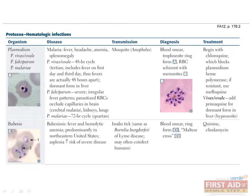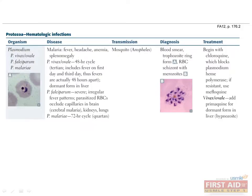The two protozoa causing hematologic infections are Plasmodium and Babesia. Members of the Plasmodium genus — P. vivax, P. ovale, P. falciparum, and P. malariae — are the causes of malaria, a mosquito-borne infection widespread in tropical regions such as Asia and Africa. Malaria is characterized by cyclic fever, headache, anemia, and splenomegaly. P. vivax and ovale typically cause fever every two days, known as tertian fever. P. malariae causes fever every three days in a quartan cycle, and P. falciparum has a severe irregular fever that often occurs every day as a continuous fever.